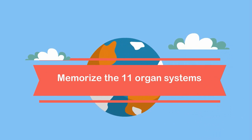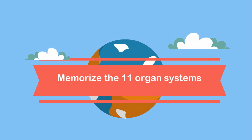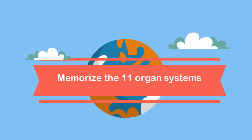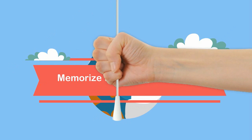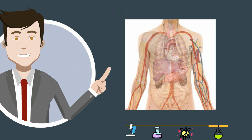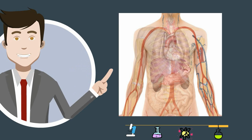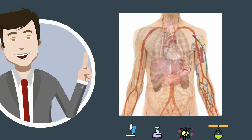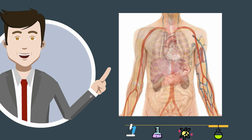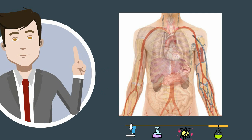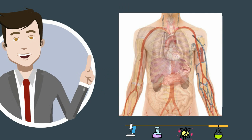Welcome to Moomoo Math and Science. In this video I would like to show two ways to help memorize the 11 organ systems of the human body. The organ systems are made up of organs that work together to create an organ system, and then the organ systems work together to keep the organism, or you, alive.